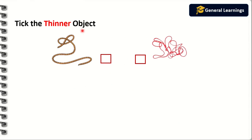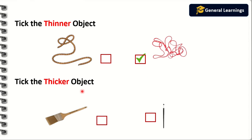Next they told us to tick the thinner object. Here they have given two rope pictures — thinner means the width of the object should be small. While comparing these two pictures, the right rope has a smaller width, so we are going to mark that thinner object. Next they tell us to tick the thicker object — they have given two brush pictures. Thicker means the width should be more. While comparing, this brush has more width than the other, so we are going to mark this as the thicker object.